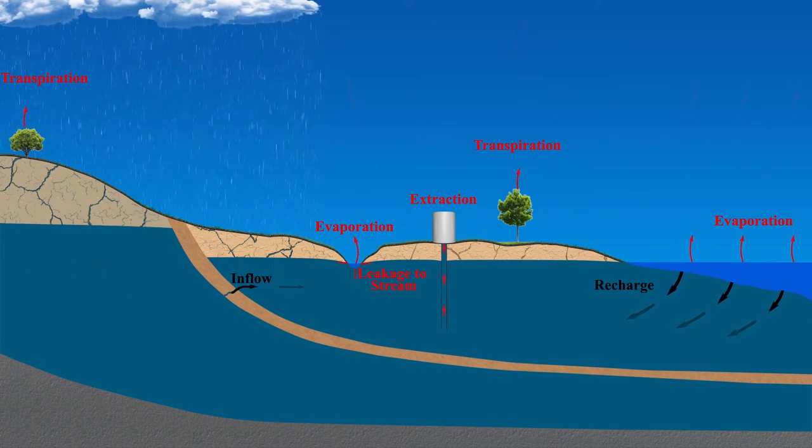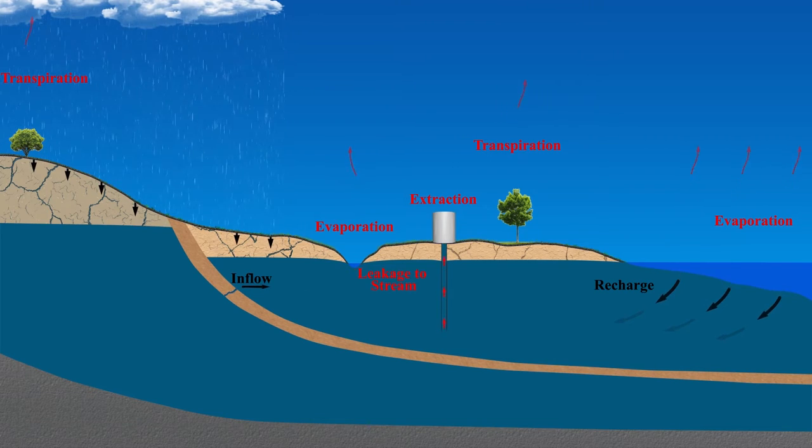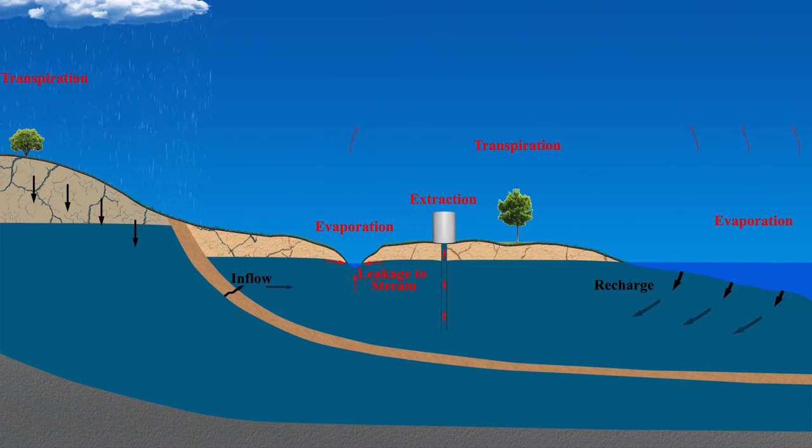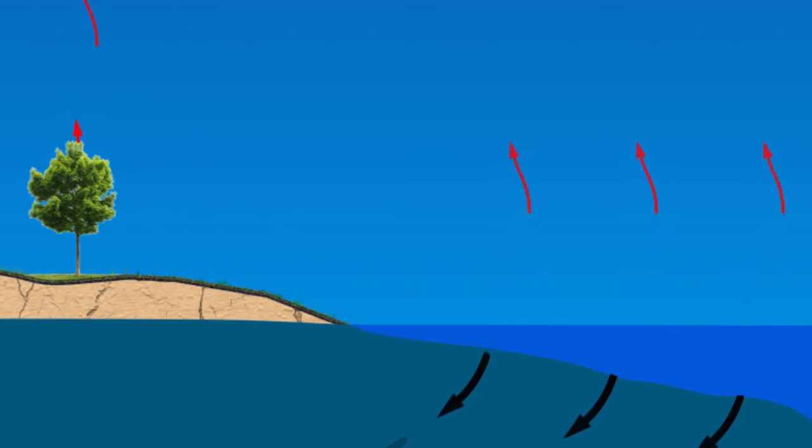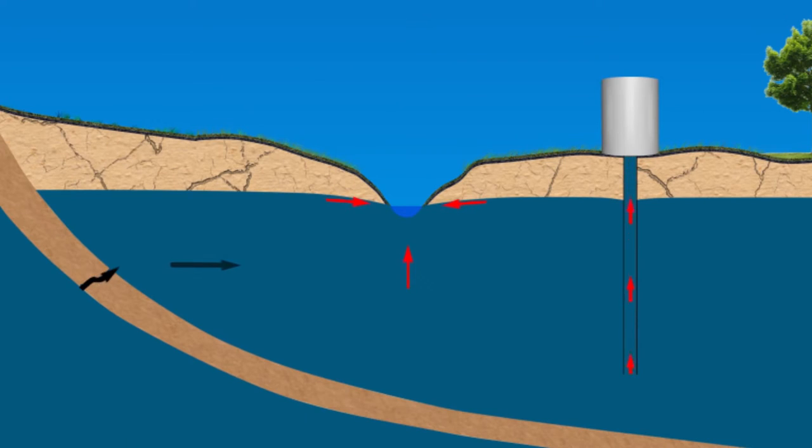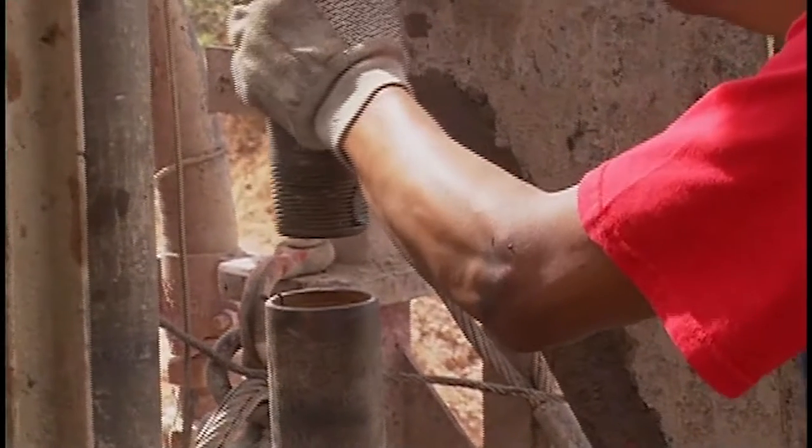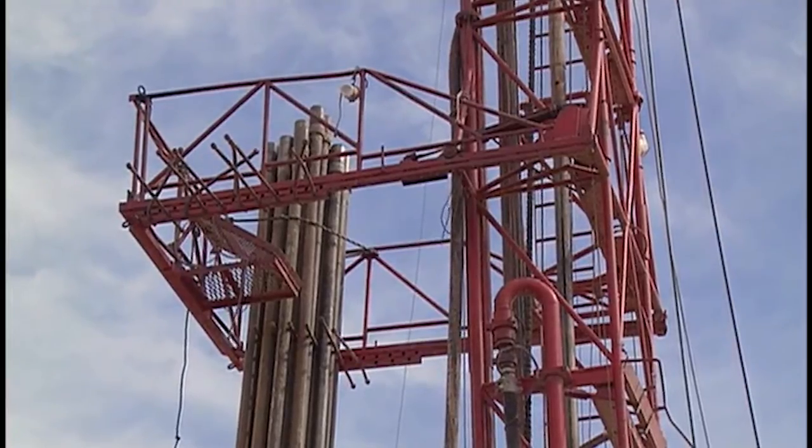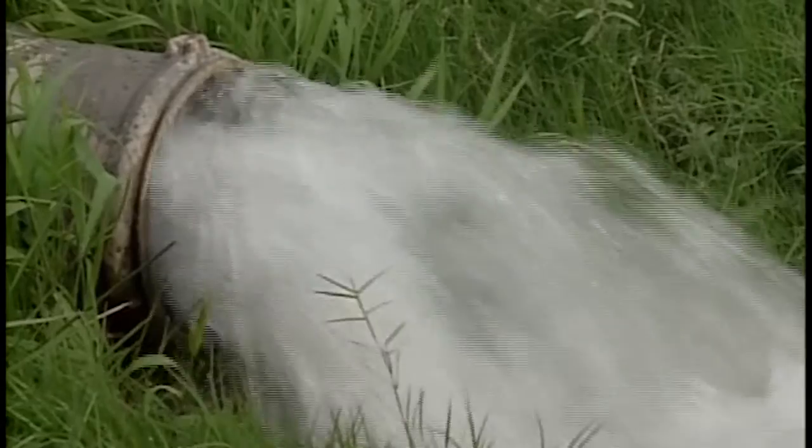Water exiting an aquifer naturally or artificially is called discharge. Examples of naturally occurring discharge are evaporation, groundwater used by plants, springs, leakage into streams or lakes, and leakage from one aquifer to another. The most common discharge from an aquifer by humans is pumping. Discharge is comparable to a withdrawal from a bank account.